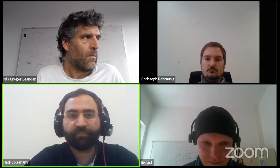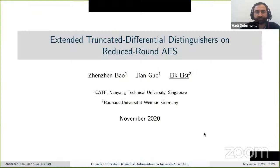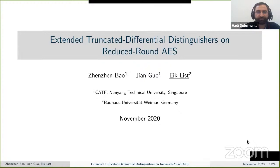The next paper is 'Extended Truncated Differential Distinguishers and Round-Reduced AES' by Jannik Nofer, Jan Guo, and Iek Lucks. Eric will present. The sum of independent permutations is well-known for improving security — many works use mirror theory or the chi-square method. This construction is close to optimal for turning PRPs into PRFs, and it is a well-studied approach.